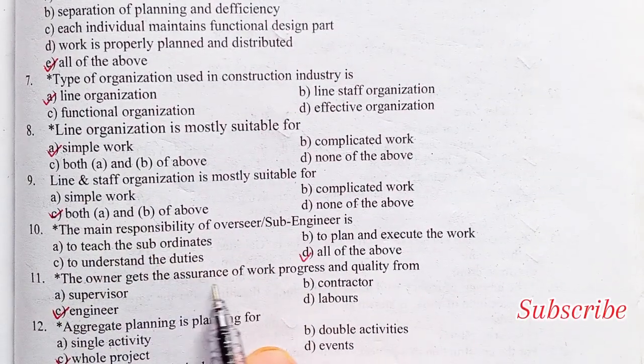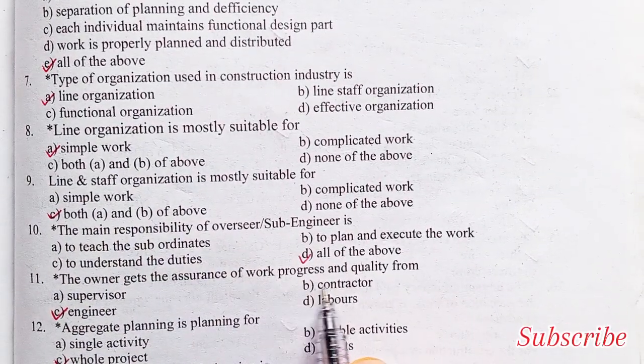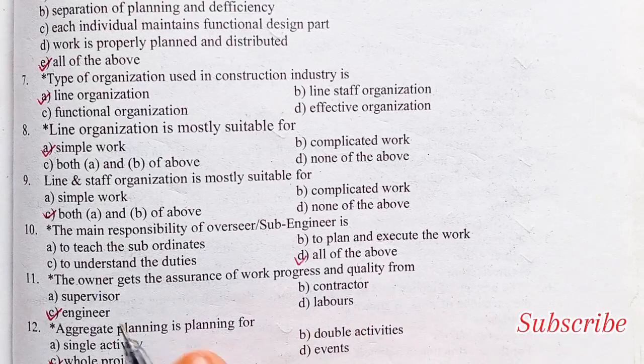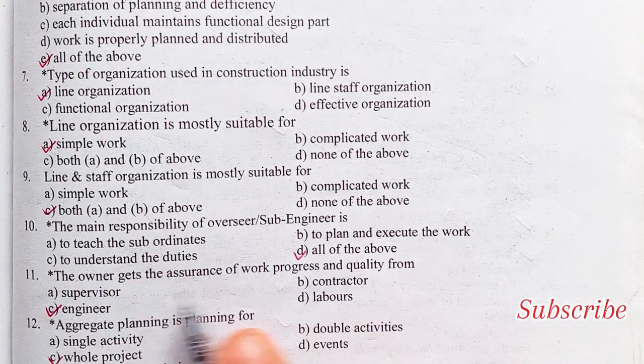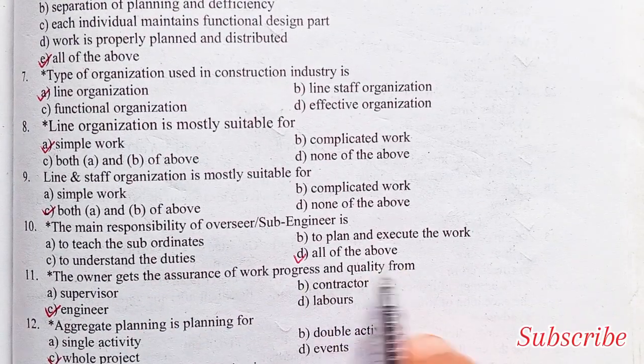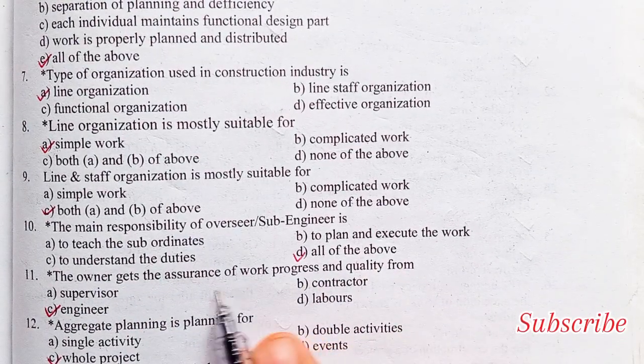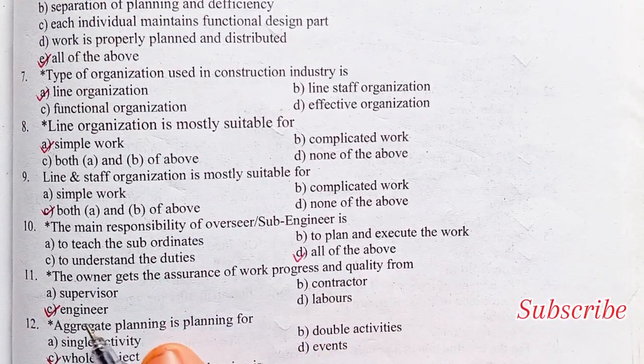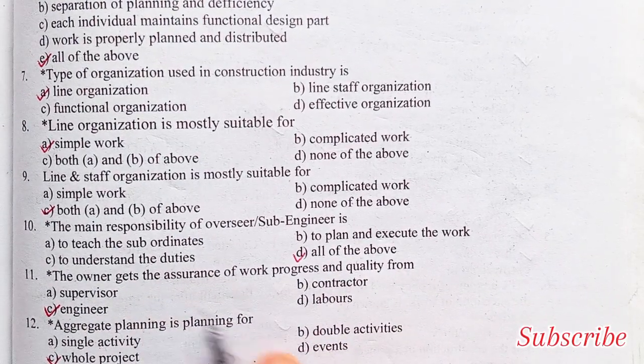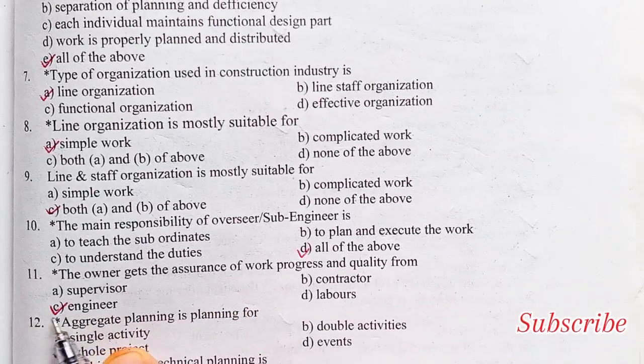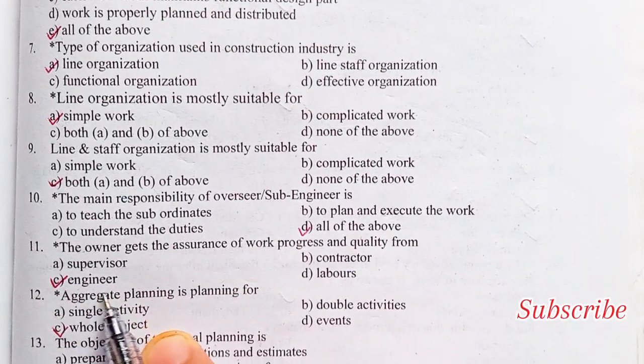The owner gets the assurance of work progress and quality from: supervisor, contractor, engineer, or labor. Option C is the right answer — the engineer.